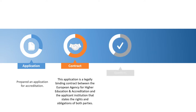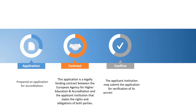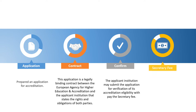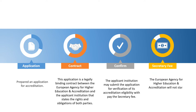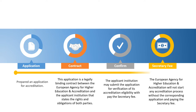The applicant institution may submit the application for verification of its accreditation eligibility with payment of the secretary fee. Once the EAHEA secretary confirms the eligible options, the applicant institution is entitled to pay the accreditation fee. The European Agency for Higher Education and Accreditation will not start any accreditation process without the corresponding application and payment of the secretary fee.